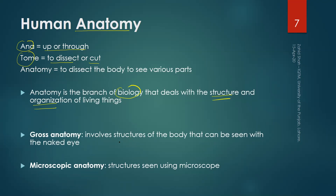Gross anatomy involves the study of structures of the body that can be seen with the naked eye without using any instruments. Microscopic anatomy focuses on the study of structures of the body as seen using a microscope. In our course we will focus on gross anatomy for the most part, especially in module zero.